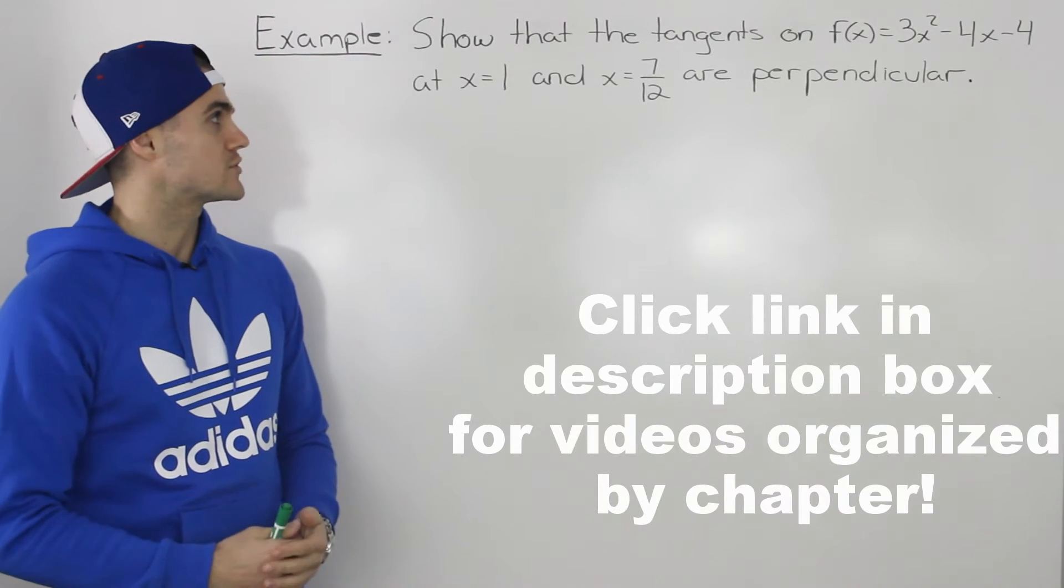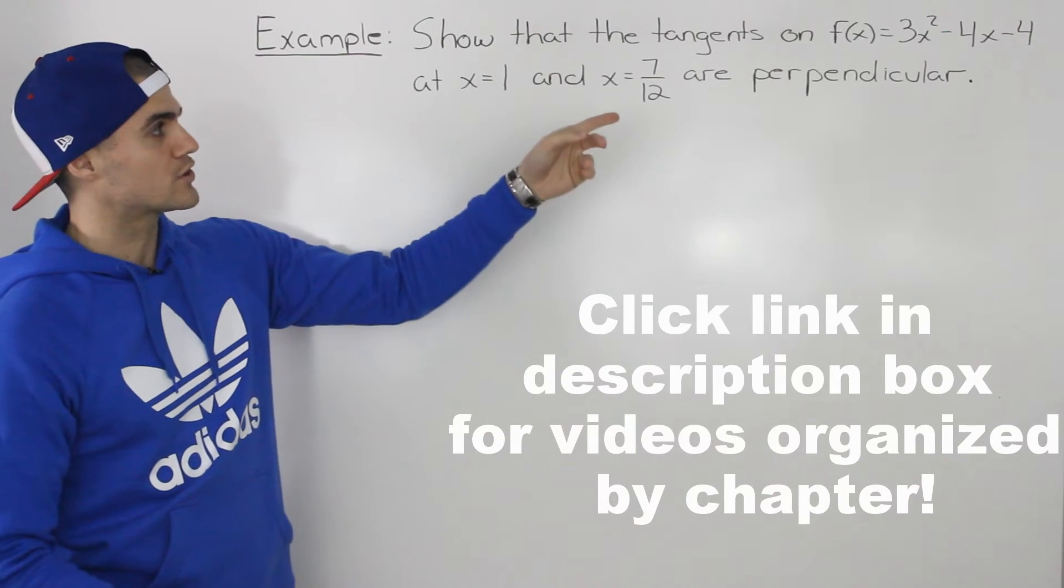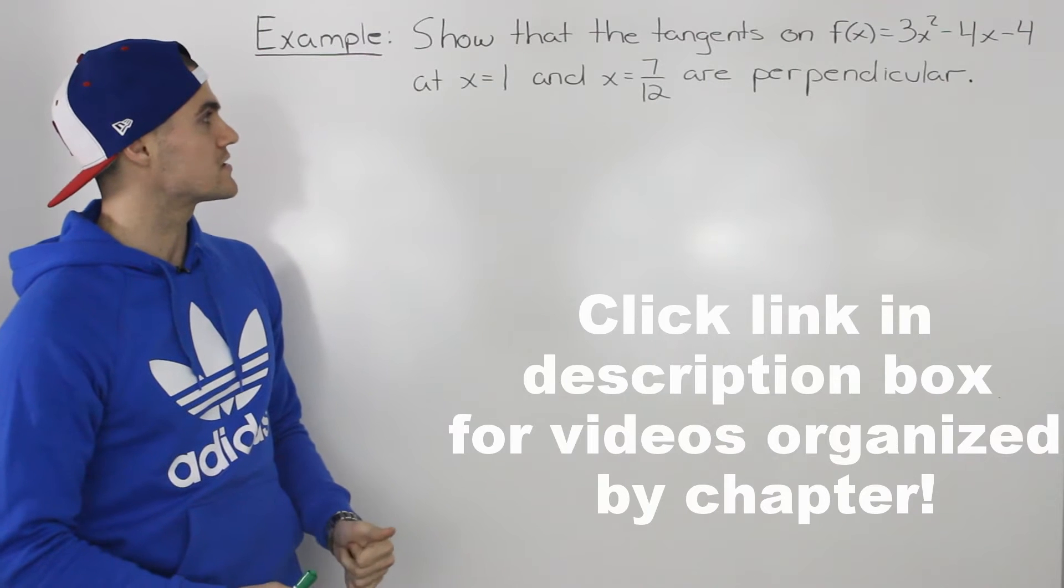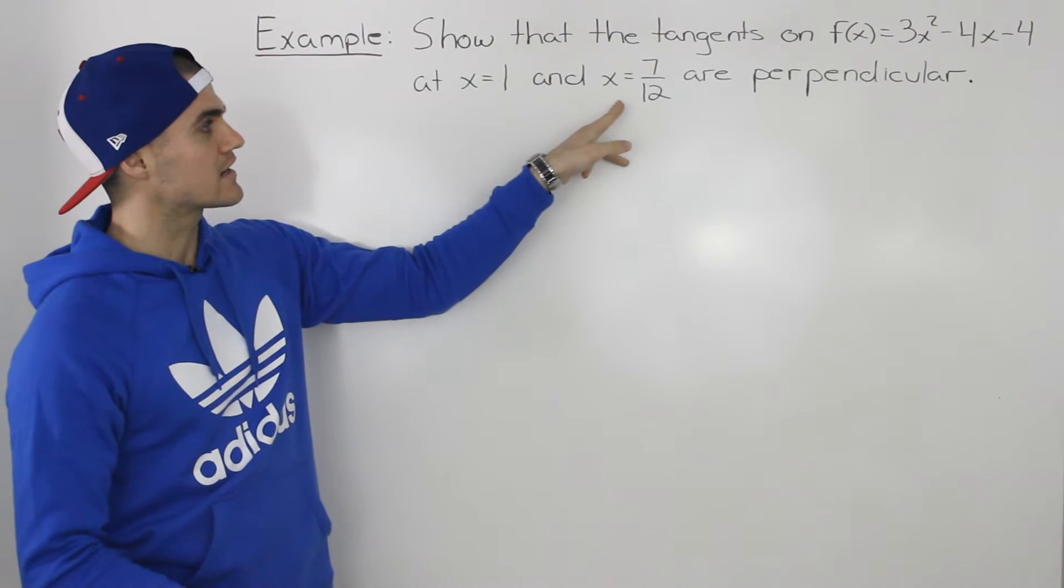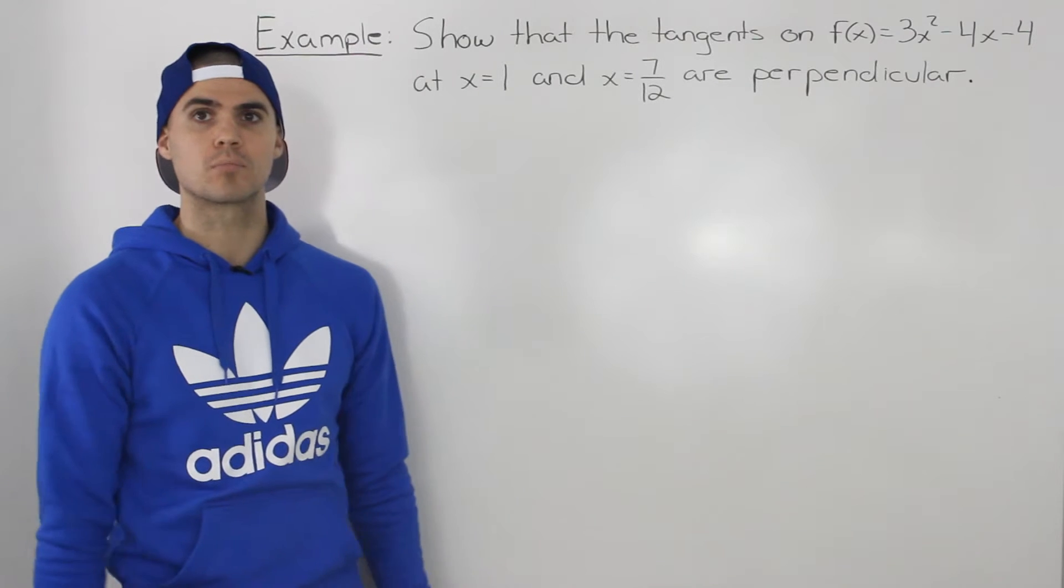Moving on to the next example, we have to show that the tangents on the function 3x squared minus 4x minus 4 at an x value of 1 and at an x value of 7 over 12 are perpendicular.